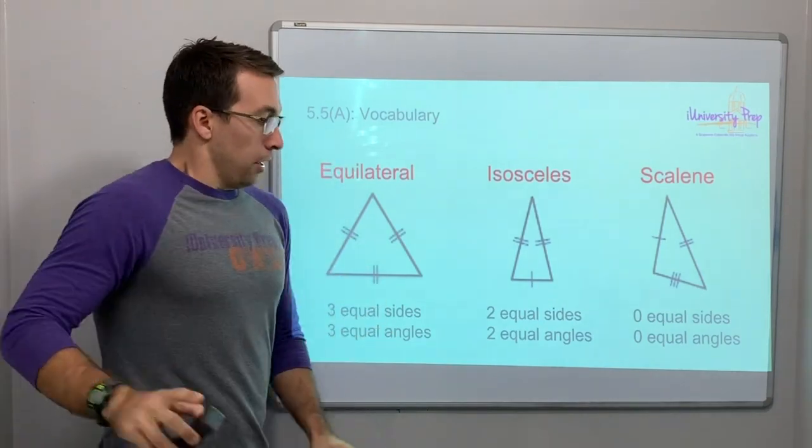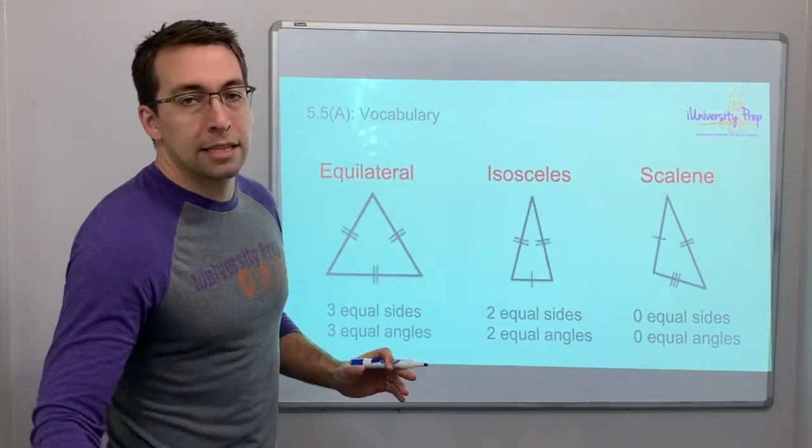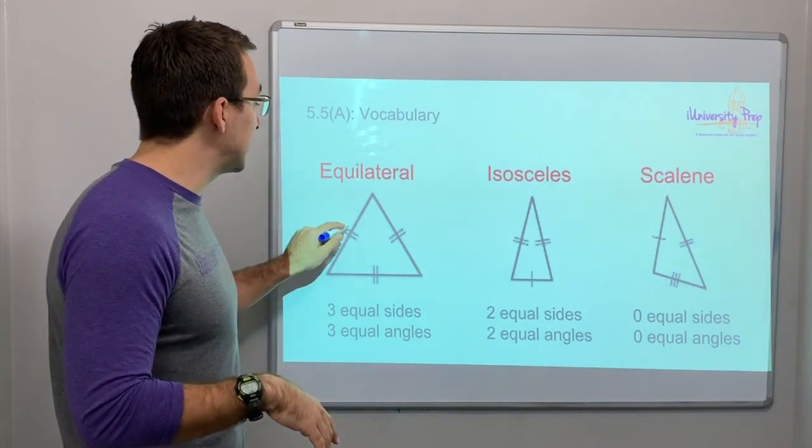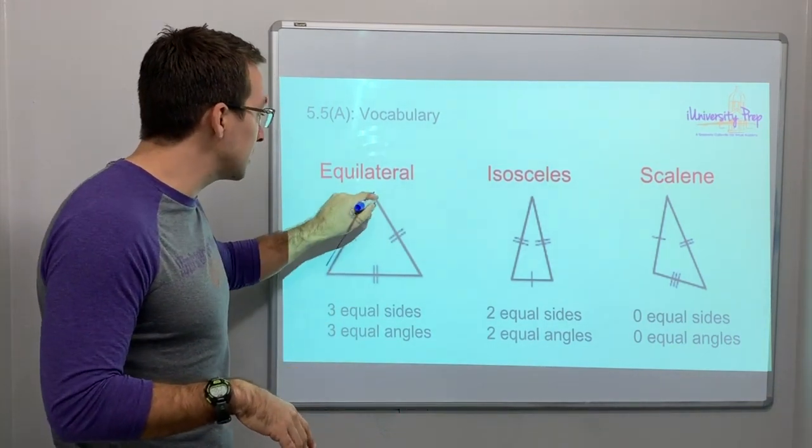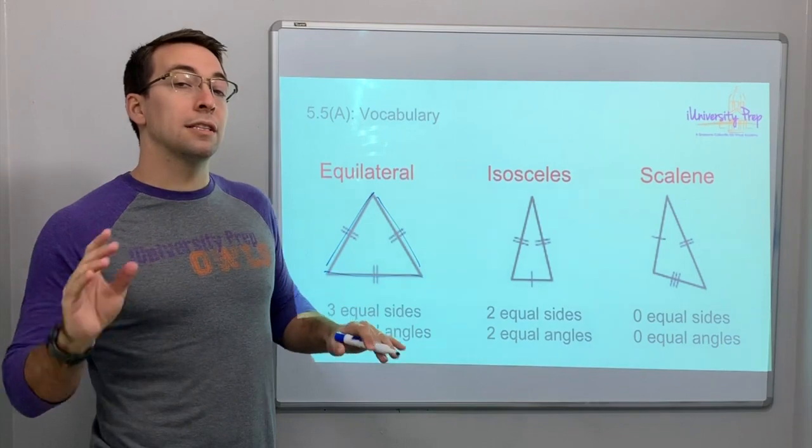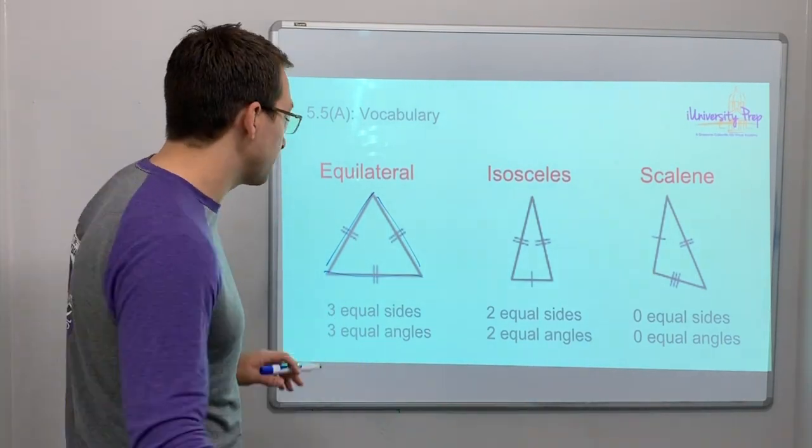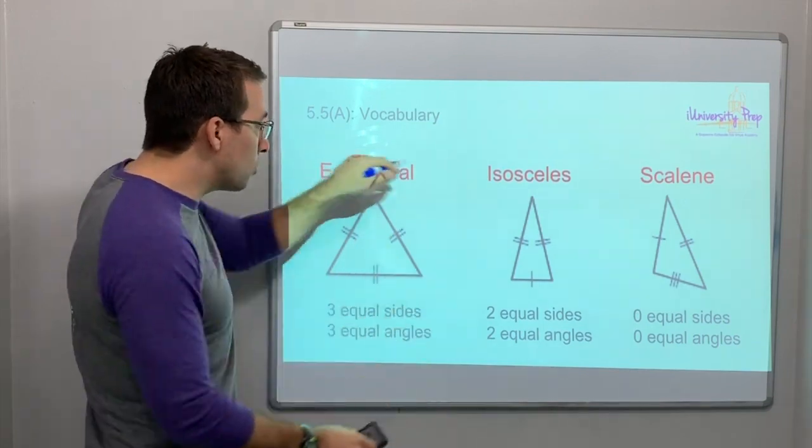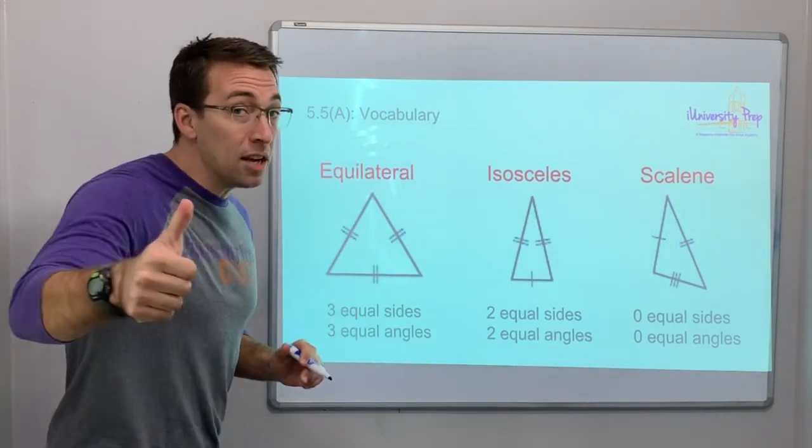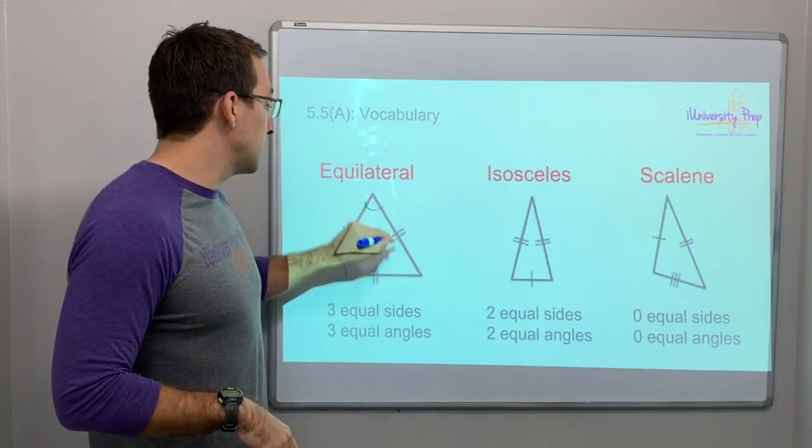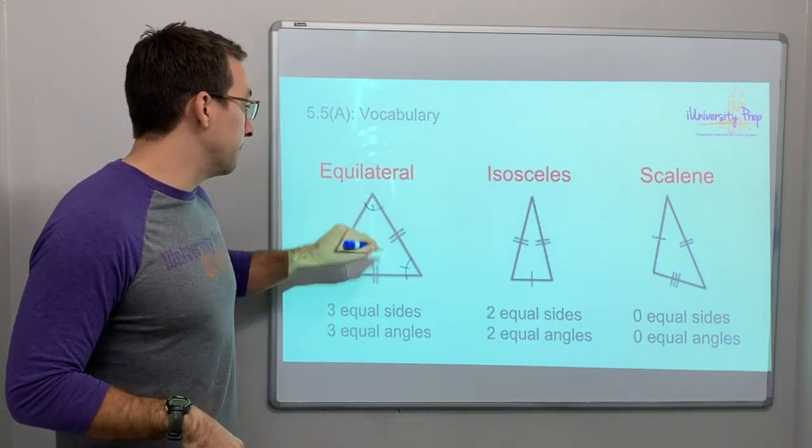There's two ways to classify triangles. You can classify a triangle by its side lengths, or you could classify a triangle by the angles, and we're going to talk about both. An equilateral triangle has equal side lengths and all three are equal angles. These angles are all the same.